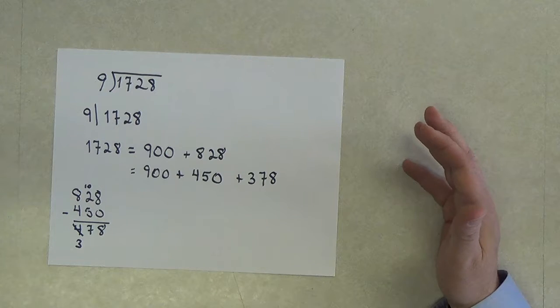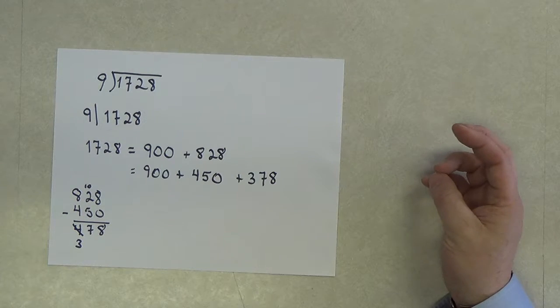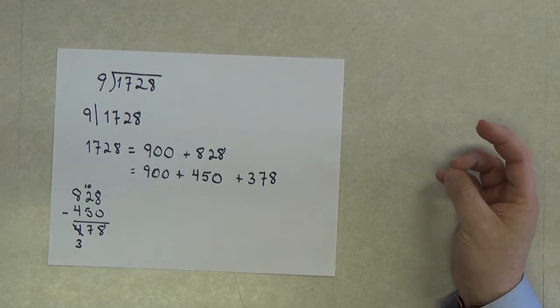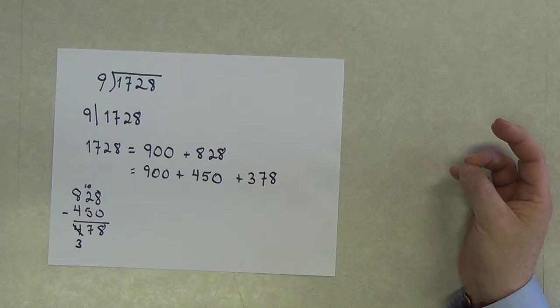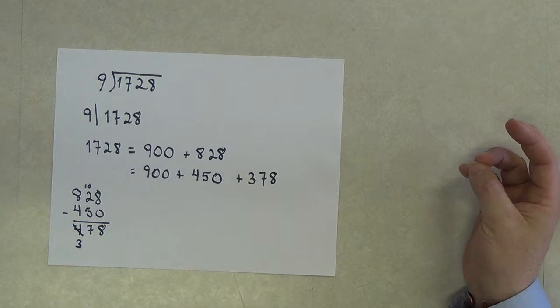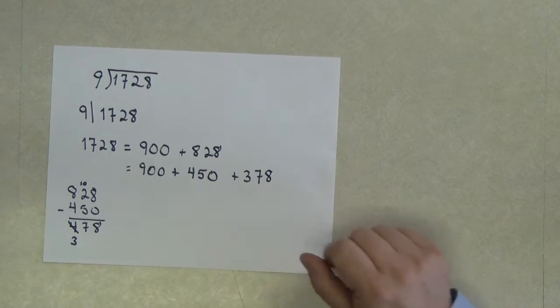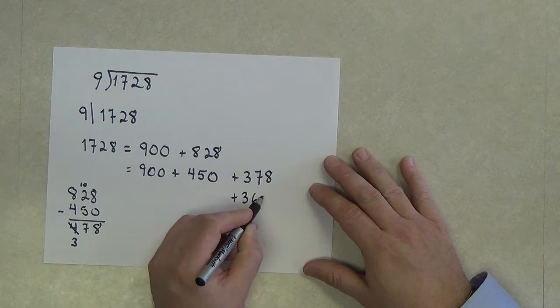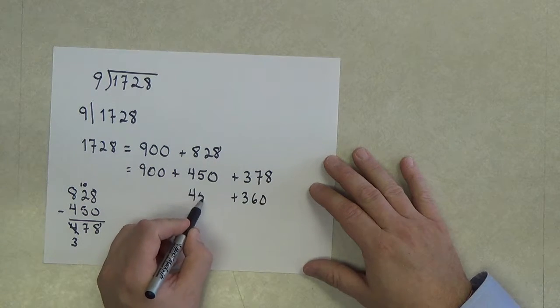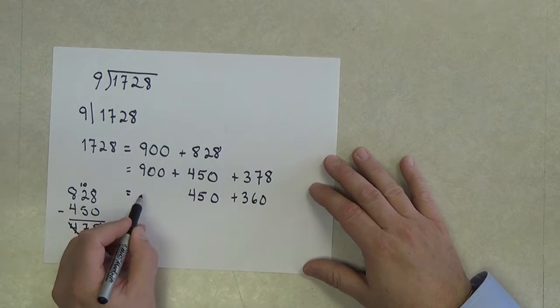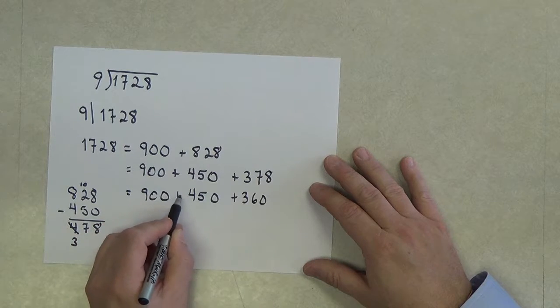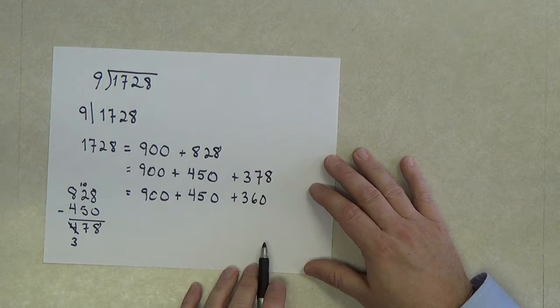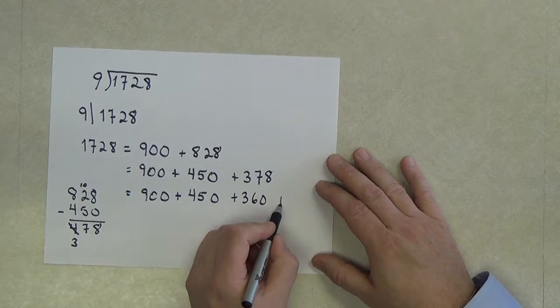Well, I know that 9 times 4 is 36. So if 9 times 4 is 36, then I know 360, which is less than 378, is a multiple of 9. I'm going to bring my 450 down, bring my 900 down for the next line. So now, how much stuff is left over? If I'm not mistaken, that's 18.